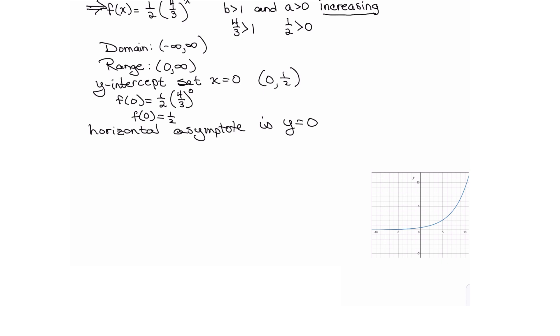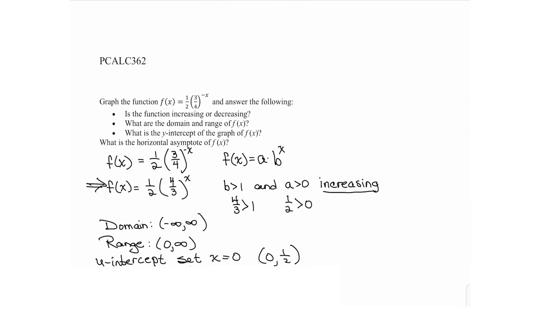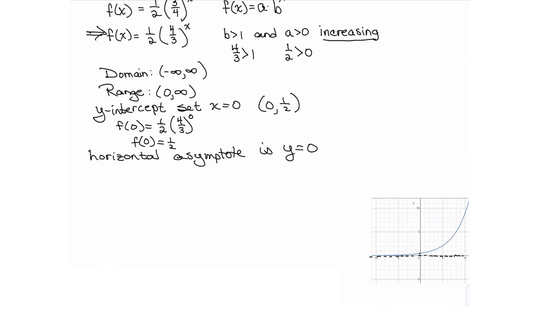Our f(0) is one-half, so that gives us this point right here. And then our horizontal asymptote you can see is running along the x-axis which has the equation y equals 0.